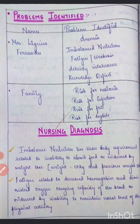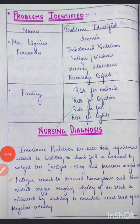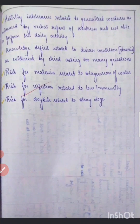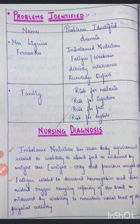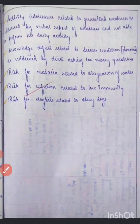For anemia, we have written: imbalanced nutrition, fatigue related to decreased hemoglobin and diminished oxygen-carrying capacity, activity intolerance related to generalized weakness, and knowledge deficit. The three risk diagnoses mentioned are related to the family members — what risks they are exposed to.